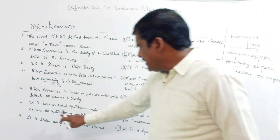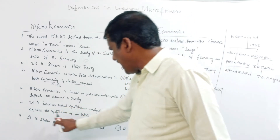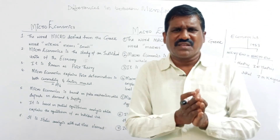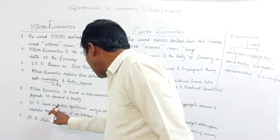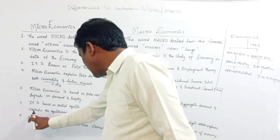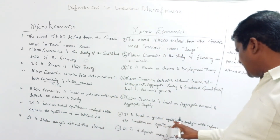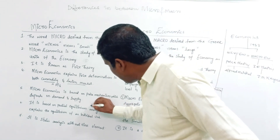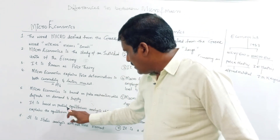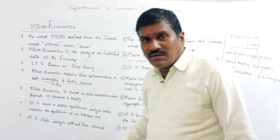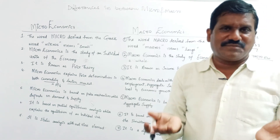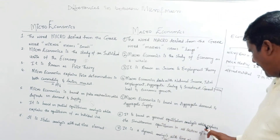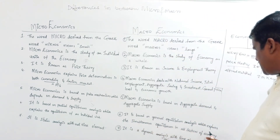Microeconomics is based on partial equilibrium analysis, which explains the equilibrium of the individual unit. 'Partial' means something — not complete. Macroeconomics is based on general equilibrium analysis, which explains the simultaneous equilibrium for all sectors of the economy.